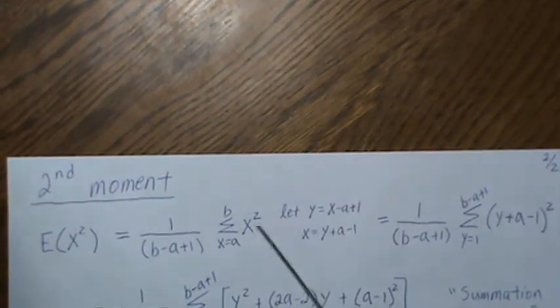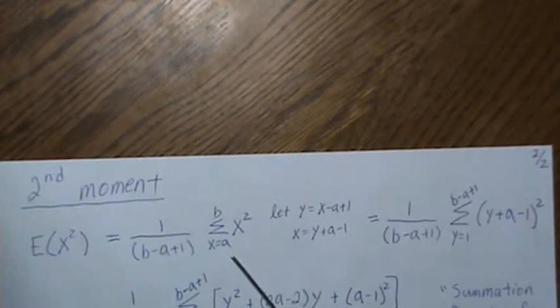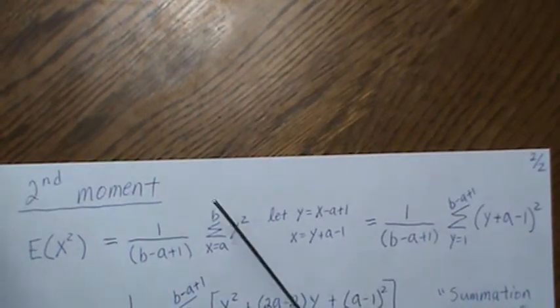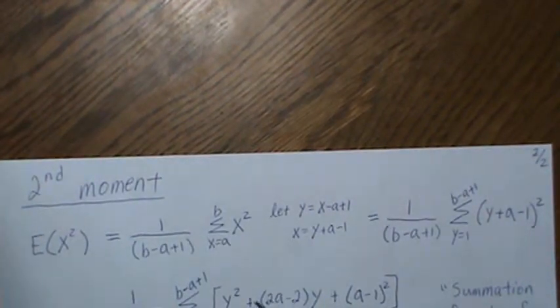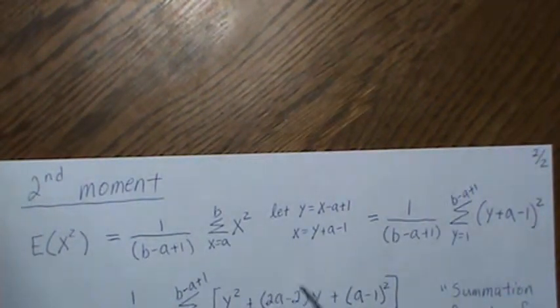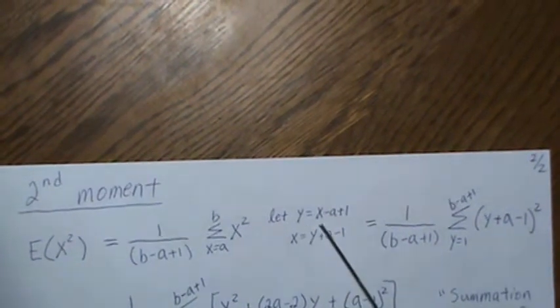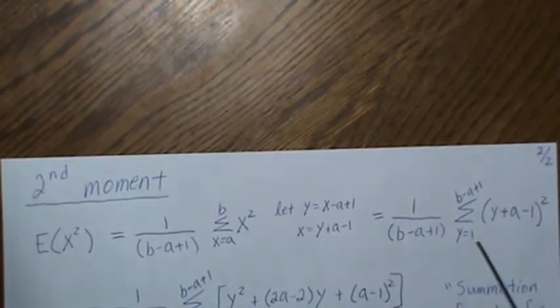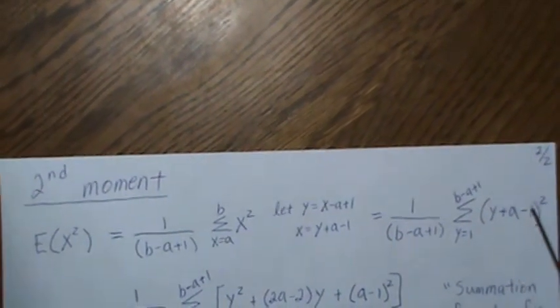There's probably some formula to sum that I don't know, so I'm going to have an index change. Basically, I want to start from 1 to some number, and then I know how to sum integers and squared integers. So we make an index change. We let Y equal X minus A plus 1. So then the change of variable goes from 1 to B minus A plus 1, and that's our new variable.